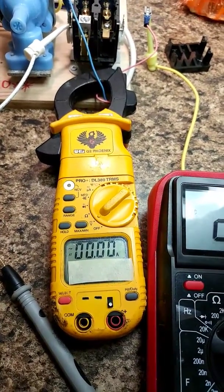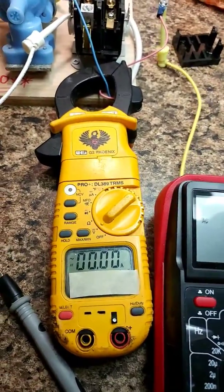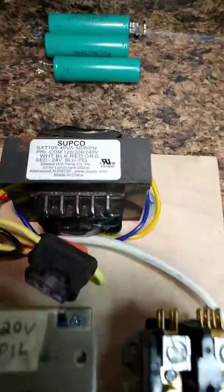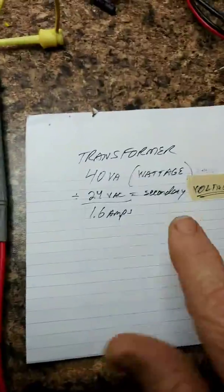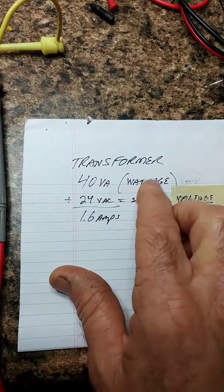So to kind of give you an idea of what's acceptable for a transformer amperage, this one is a 40VA transformer. And so basically the VA is wattage, volt amps, which is wattage.